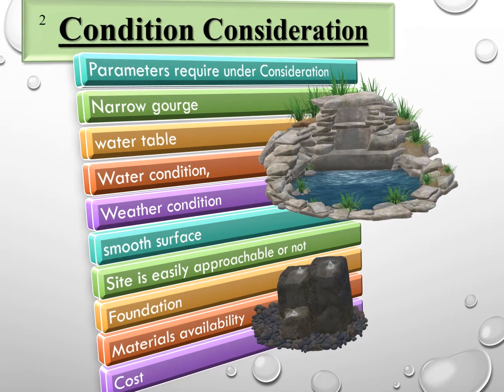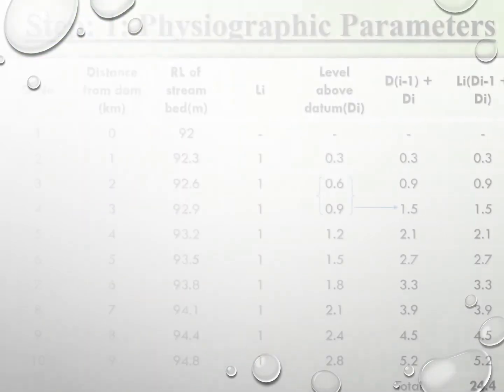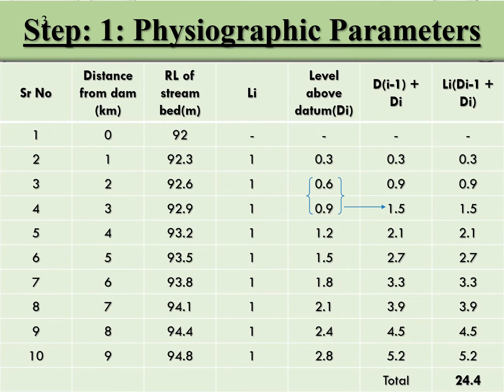The first step is to determine the physiographic parameters. For that, I have to divide the main stream length into 9 parts at 1 km, 2 km, 3 km, 4 km and so on. At each kilometer we have to take levels, meaning an array of stream bed levels.